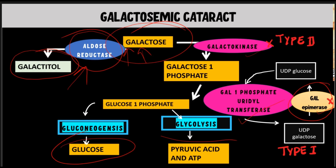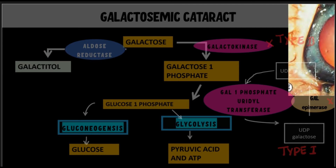Galactosemia can be of three types. Type 1 is due to missing galactose-1-phosphate UDP transferase (uridyl transferase). Type 2 is because of galactokinase deficiency. Type 3 is because of galactose epimerase deficiency. Type 1 is the most severe. Type 2 is a milder disorder associated with galactosemia and cataract but usually does not have any other systemic abnormality — that is one important point to remember.